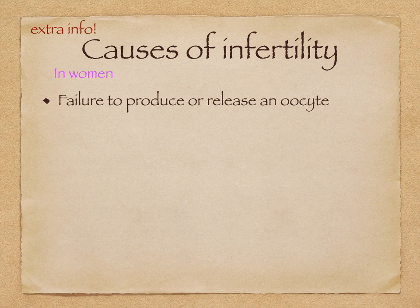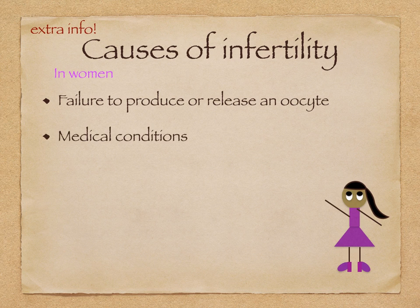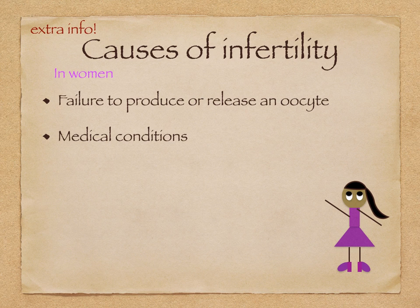Infertility is a term usually applied to couples who have been unable to conceive a child, having tried for a year or more to do so. The reasons for infertility in women include failure to produce or release an oocyte, often a result of an imbalance in the hormones that control the menstrual cycle. A number of medical conditions can also lead to infertility — for example, polycystic ovarian syndrome makes it difficult for the ovaries to produce oocytes. Thyroid problems, some cancers, and AIDS also prevent ovulation.